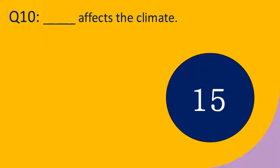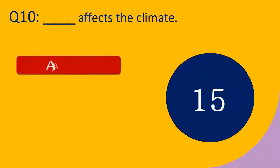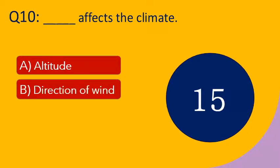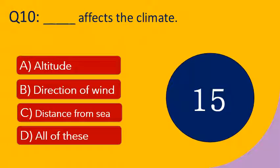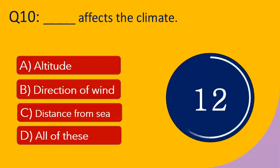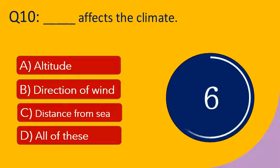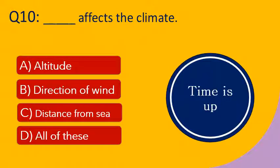Question number 10: Dash affects the climate. Options are A. Altitude, B. Direction of wind, C. Distance from sea, and D. All of these. Your time starts now. Your time is up. The right answer is all of these — altitude, direction of wind, and distance from sea all affect the climate.